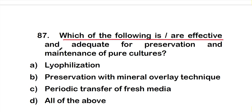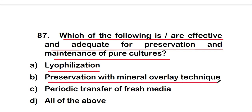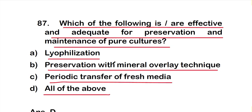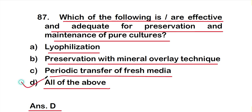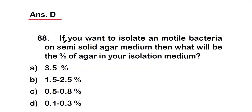Question number 87: Which of the following is effective and adequate for preservation and maintenance of pure culture? Option A: lyophilization, option B: preservation with mineral overlay technique, option C: periodic transfer to fresh media, option D: all of the above. The right answer is option D — all of the above: lyophilization, preservation with mineral overlay technique, and periodic transfer to fresh media.